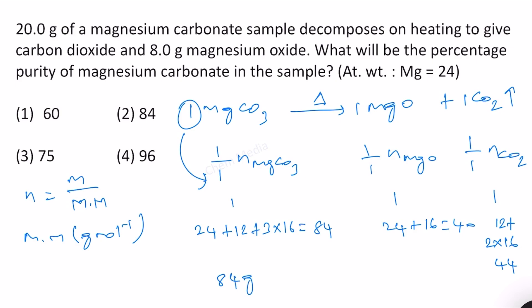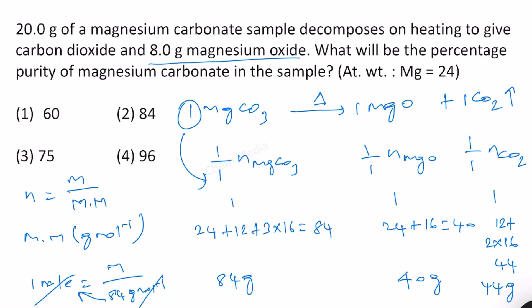Therefore, 84 grams of MgCO₃ gives 40 grams of MgO and 44 grams of CO₂. Now, it is given that 8 grams of magnesium oxide is produced. Since the molar mass of MgO is 40 g/mol and mass is 8 grams, the number of moles of MgO = 8/40 = 1/5 mole.